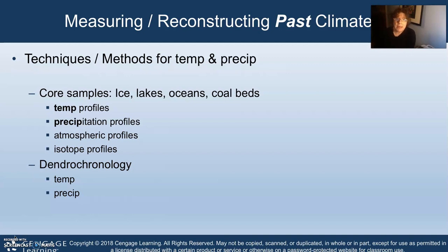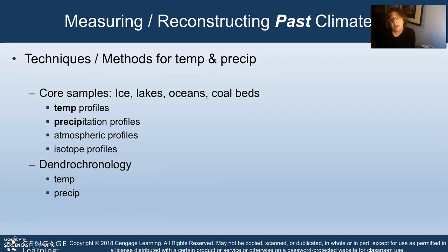When we talk about these methods — some of you are exploring this for your final projects — a lot of times we talk about core samples. Those can be from ice in ice flows or glaciers, sea ice, lakes, or sediment at the bottom of the ocean. They can also be from coal beds deep down in mines. We can look for temperature profiles, precipitation profiles, atmospheric profiles, and isotope profiles in these sediments and materials.